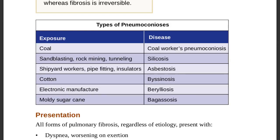Types of pneumoconiosis by exposure: coal exposure leads to coal workers' pneumoconiosis; sandblasting, rock mining, or tunneling causes silicosis; shipyard work, pipe fitting, or insulation material handling causes asbestosis; cotton or wool industry causes byssinosis; electronic manufacturing causes berylliosis.